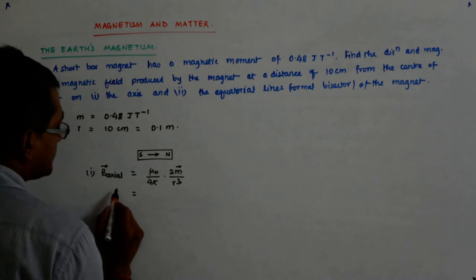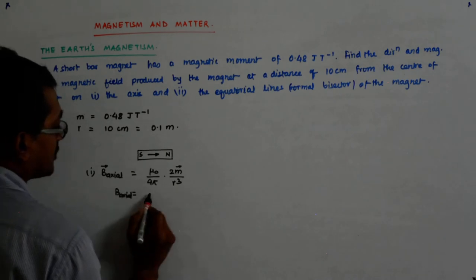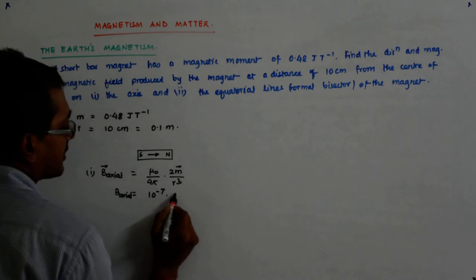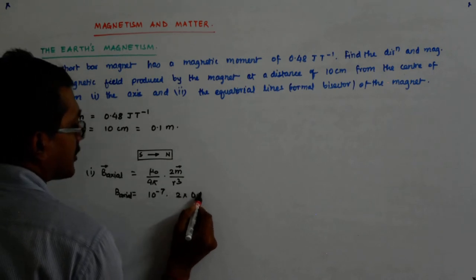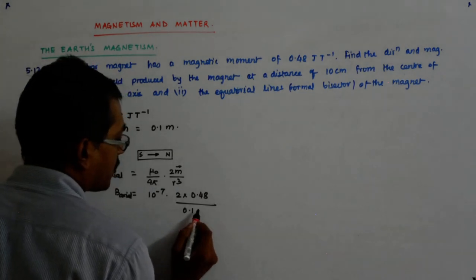Now I find the magnitude. mu0 by 4pi is 10 to the power minus 7 into 2 into 0.48 divided by 0.1.